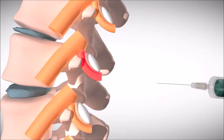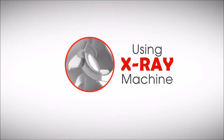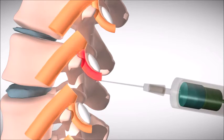He will then use a special x-ray machine to guide the needle close to the lumbar medial branch. A small amount of local anesthetic is then injected around the nerve.